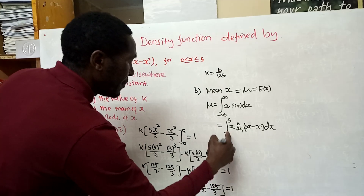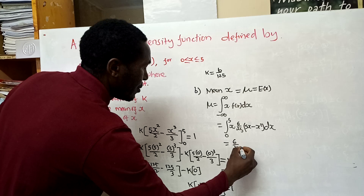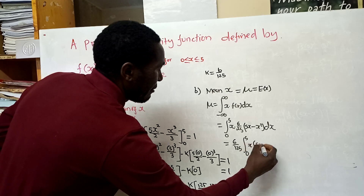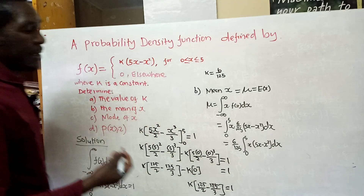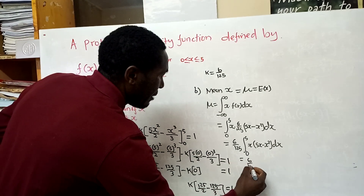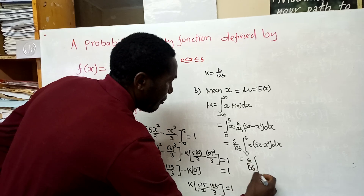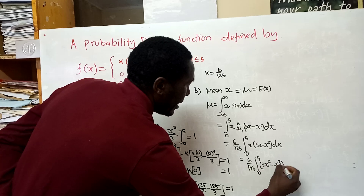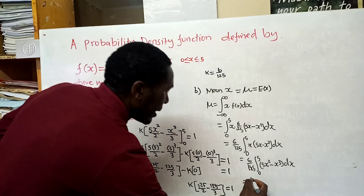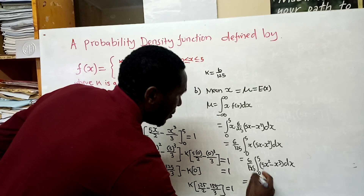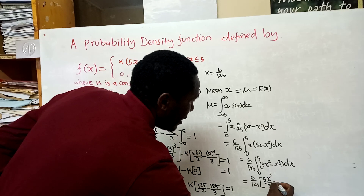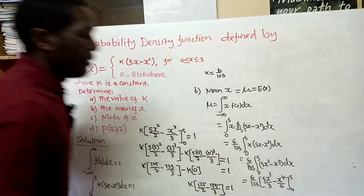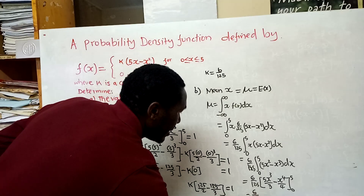Taking the constant outside the integral: (6/125) times the integral from 0 to 5 of x(5x - x²) dx. This expands to (6/125) times the integral from 0 to 5 of (5x² - x³) dx. Integrating gives (6/125) times [5x³/3 - x⁴/4], evaluated from 0 to 5.